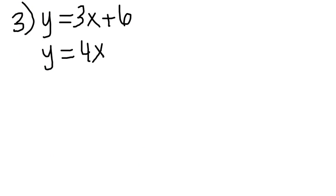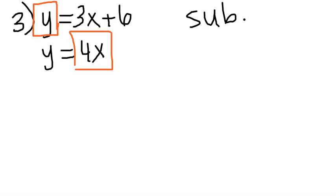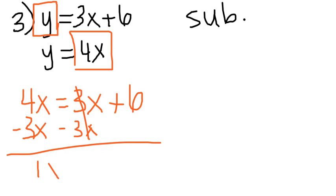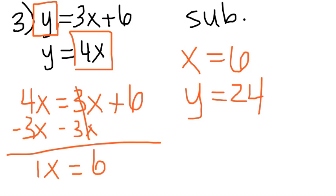Number three, the easiest method is substitution because you already have what y is equal to. y is alone, and it equals 4x. So that means I'm just going to replace my y here with 4x. And our new equation looks like this: 4x equals 3x plus 6. Solve for x. So we want to bring the x's together. Subtract 3x. And you get 1x equals 6. In other words, x is 6. Plug that back in, and you get y equals 24. And that option is letter D.